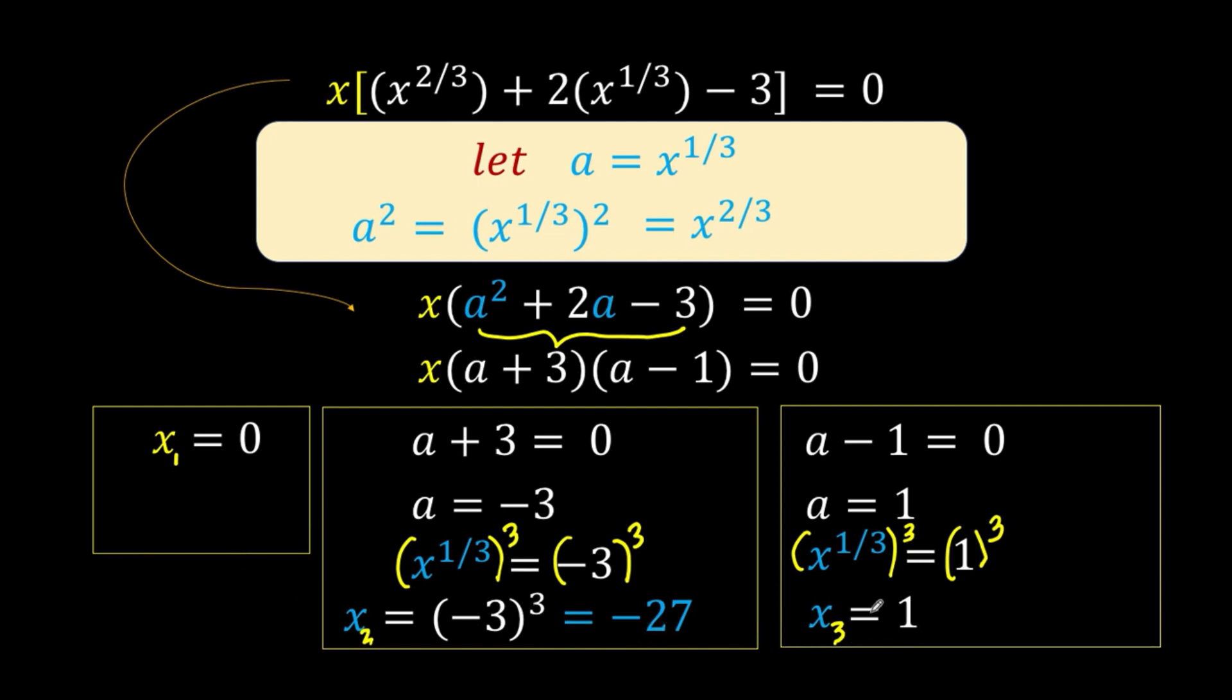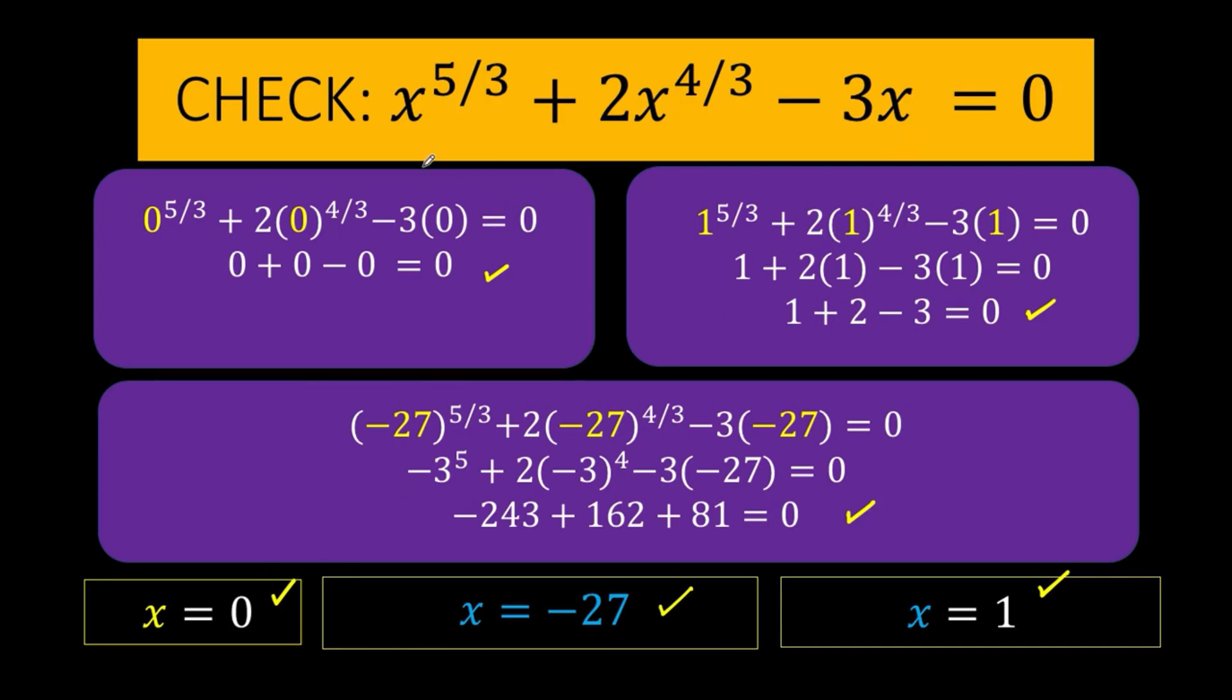Now let's check if all these answers are valid given the original equation. Let's also watch out for any possible extraneous roots. So for our final answers, the roots of x raised to 5 thirds plus 2x raised to 4 thirds minus 3x equals 0 are x equals 0, x equals negative 27, and x equals positive 1.